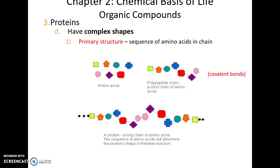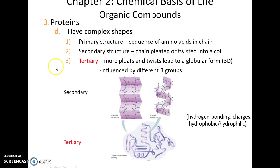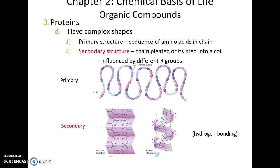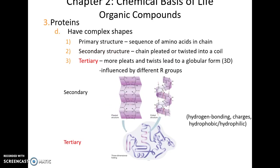Proteins have rather complex shapes, and we talk about their structure at four different levels. The primary level is just the sequence of specific amino acids forming a long polypeptide chain. Secondary structure is when the different R groups start to interact and form coiled or pleated structures, often caused by hydrogen bonding. Tertiary structure is when these secondary structures fold up on themselves, giving the 3D form of the protein.